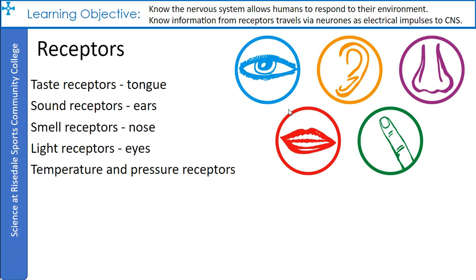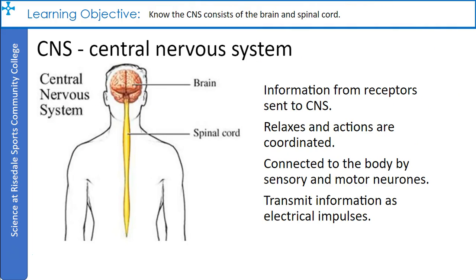Receptors are the cells that detect stimuli. There are many different types of receptors, such as taste receptors on the tongue, sound receptors in your ears, smell receptors in your nose, and light receptors in your eyes. Receptors can form part of larger complex organs — for example, the retina of the eye is covered in light receptors. The central nervous system is where all the information from the receptors is sent and where reflexes and actions are coordinated. In vertebrates, animals with backbones, this consists of the brain and the spinal cord only.